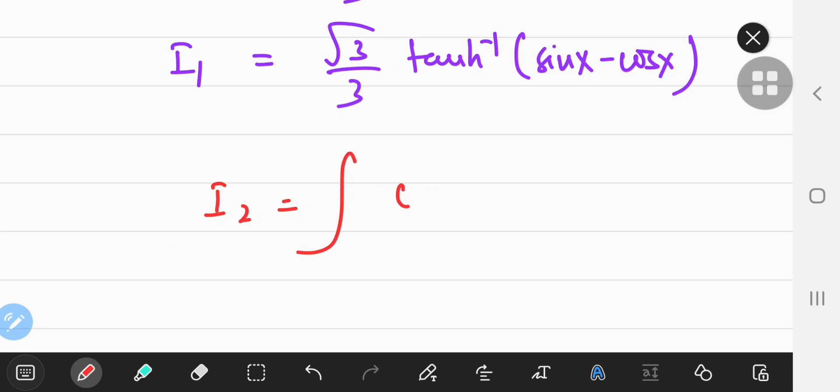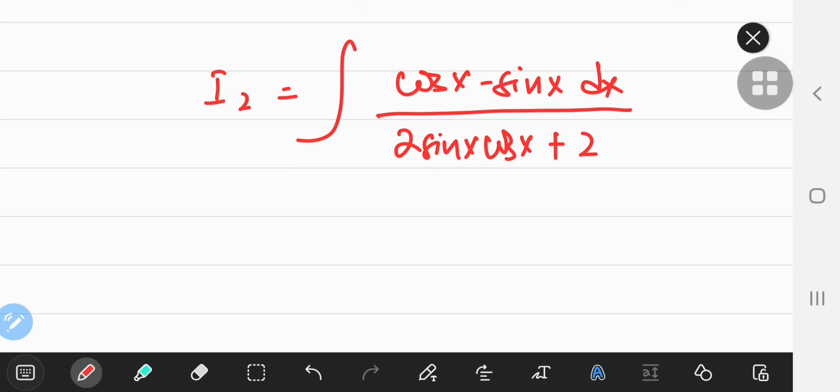Now, for i2, which is the integral of cos x minus sine x dx divided by 2 times sine x cos x plus 2. And once again, the exact same approach, we know that the numerator cos x minus sine x dx is actually the differential of u, where this is the second step of our u sub, and the first step would be sine x plus cos x equal to u.